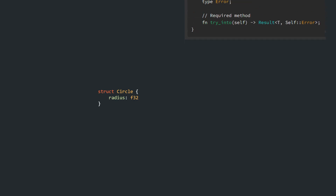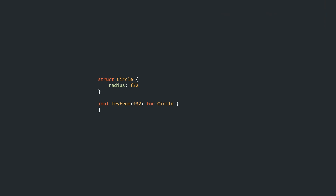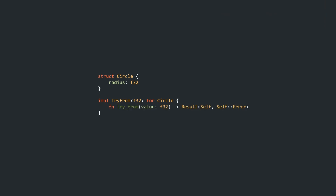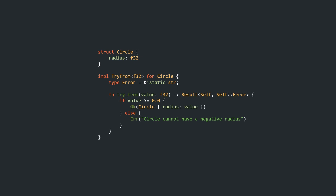Unlike From, these traits allow you to gracefully handle cases where a conversion might fail. In our circle example, we want to convert from an F32 using TryFrom. Because floating point values can be negative, we need to make sure not to accidentally create a circle with a negative radius. Implementing the TryFrom trait requires us to define the function `try_from`, which is very similar to `from`, but returns a Result rather than a Self directly. Self::Error is an associated type which defines the type of error the Result can hold. To keep it simple, we could use a static str here, but you could also use your custom error type. The implementation then just checks for a positive value and returns an error otherwise.